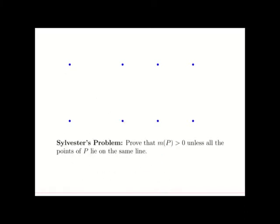With this definition, Sylvester's problem is the following. We would like to prove that there is at least one ordinary line, unless all the points of the point set lie on the same line.